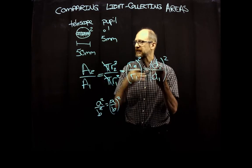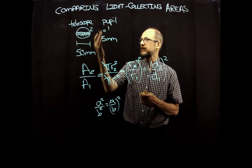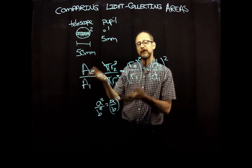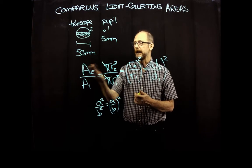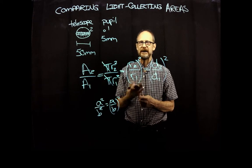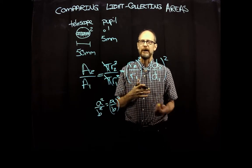And so that's the basic idea of comparing telescopes to say a pupil, or maybe even comparing two telescopes to each other. It's the ratio of the areas that matter, not the ratio of the diameters.